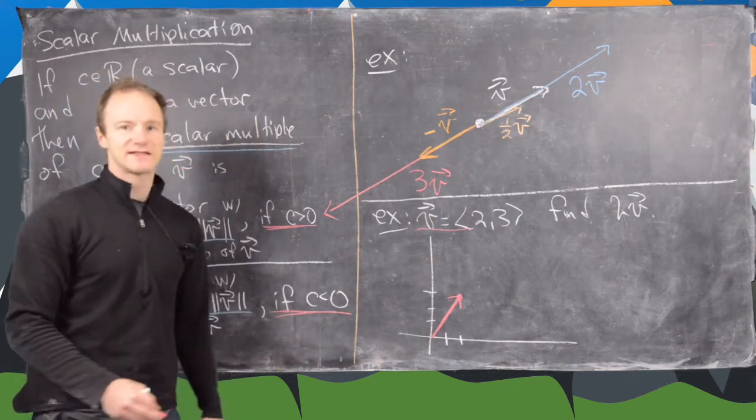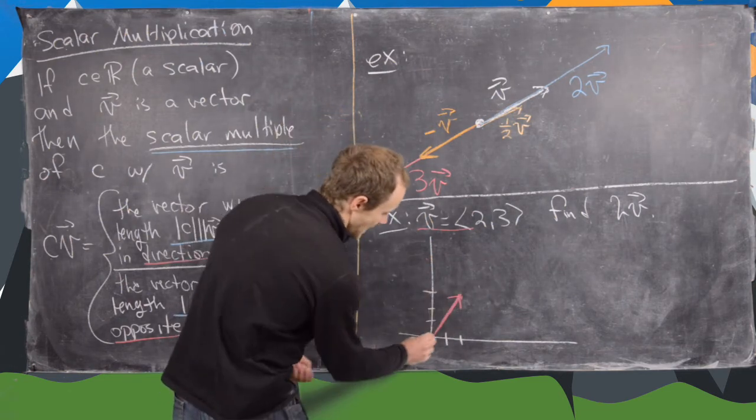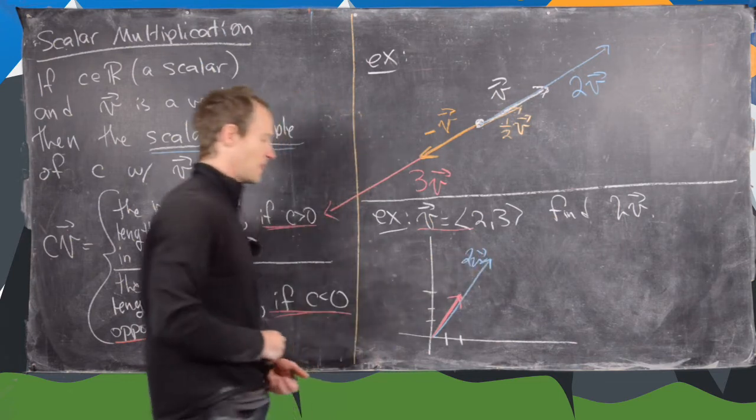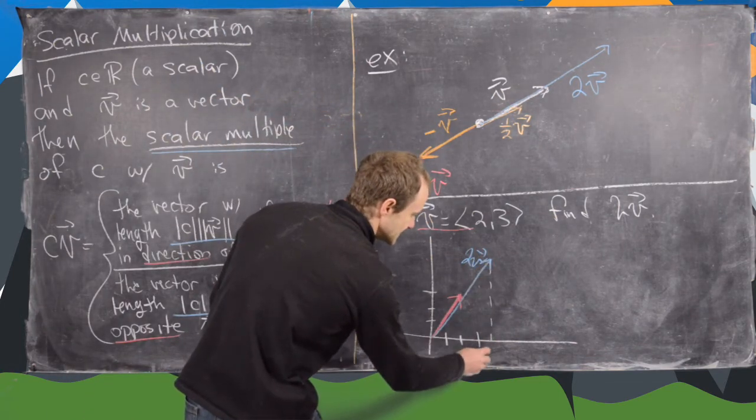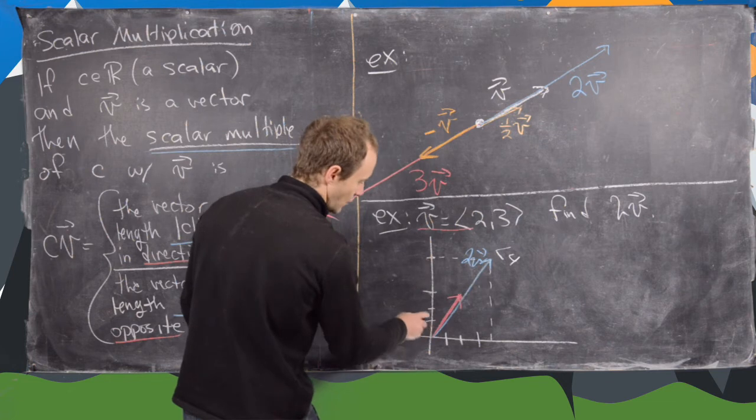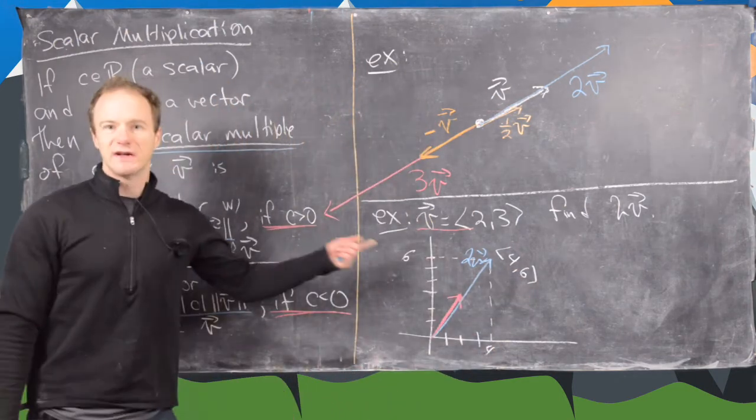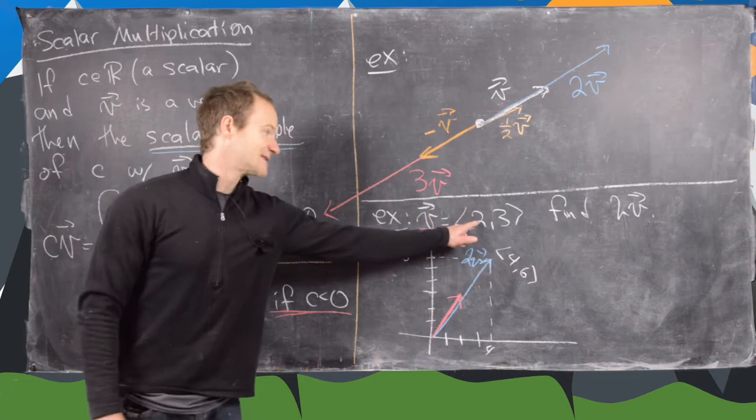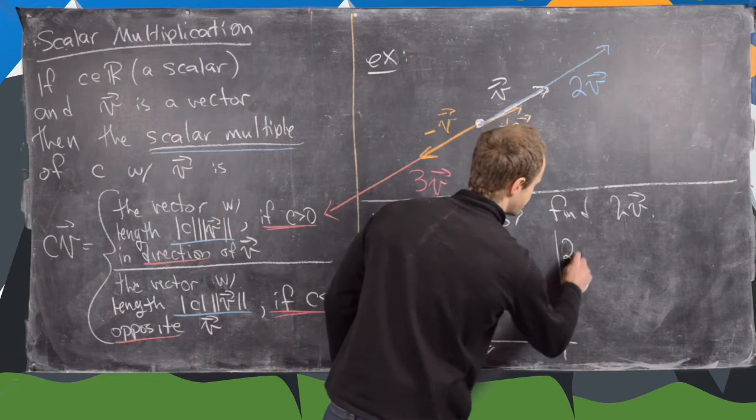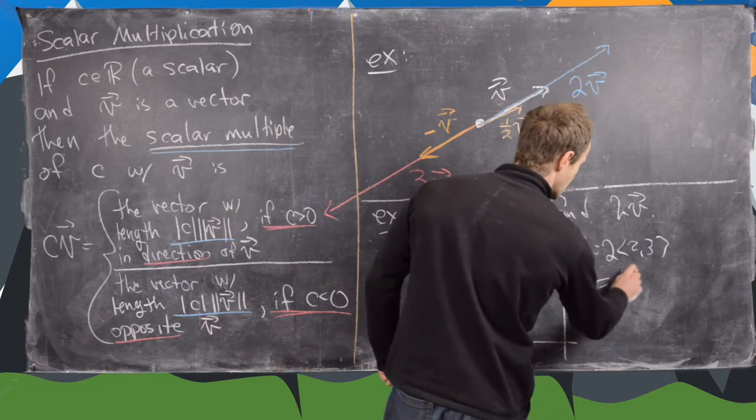And now we want this to have twice the length. So notice we're just going to extend this out double like that. And that's going to give us this vector here, which is 2v. But now notice that is about exactly equal to, notice here we get 4 and 1, 2, 3, 4, 5, 6. So that is the vector (4, 6). So we did that graphically.